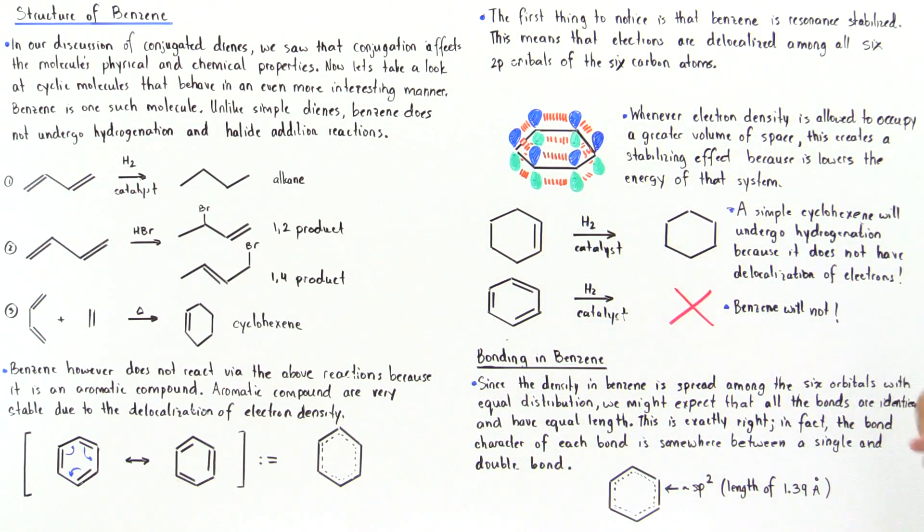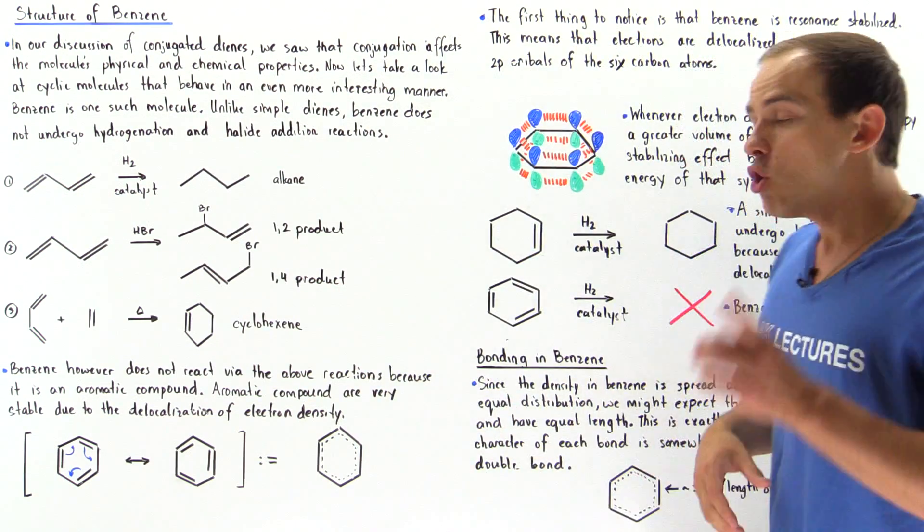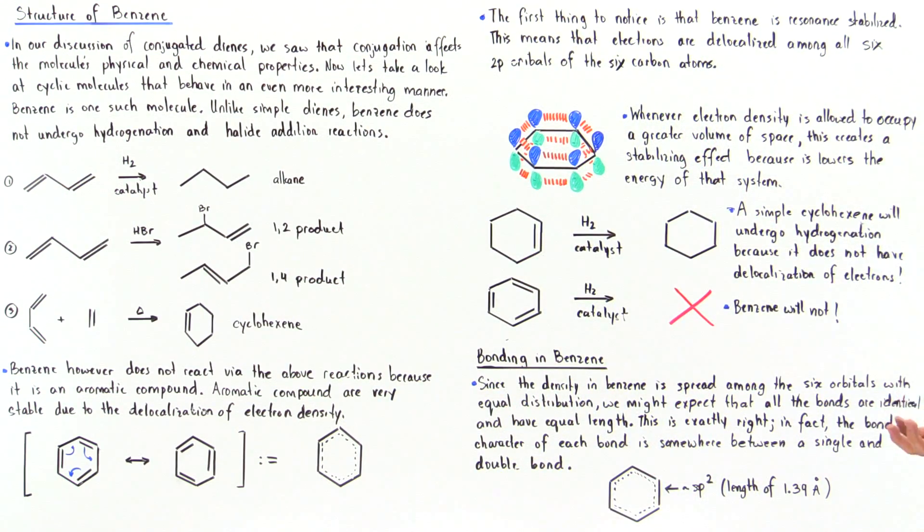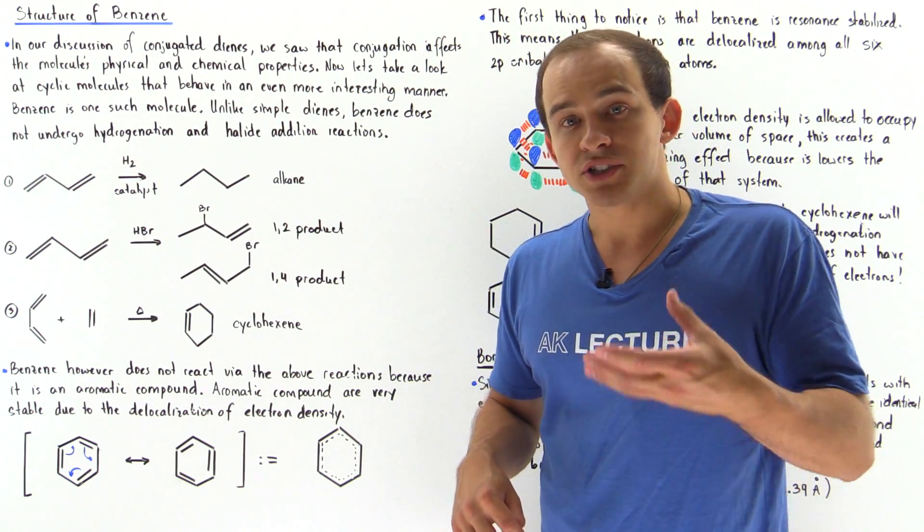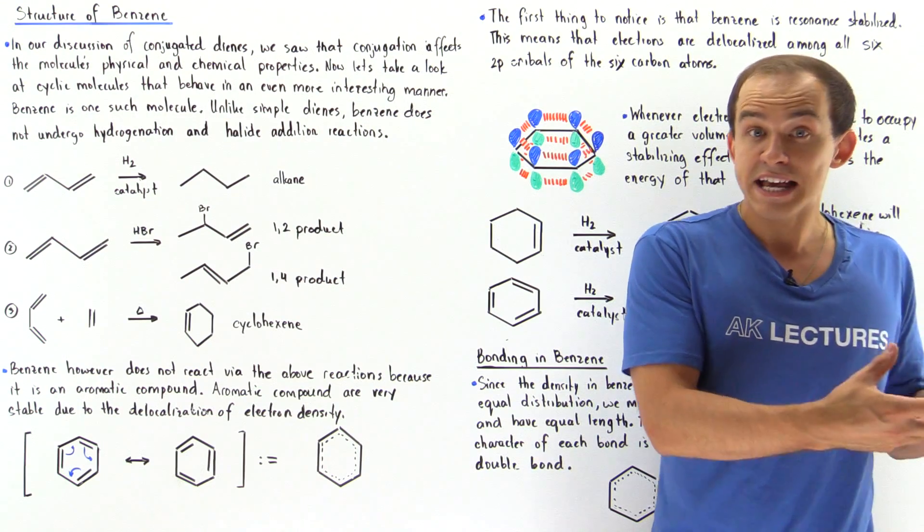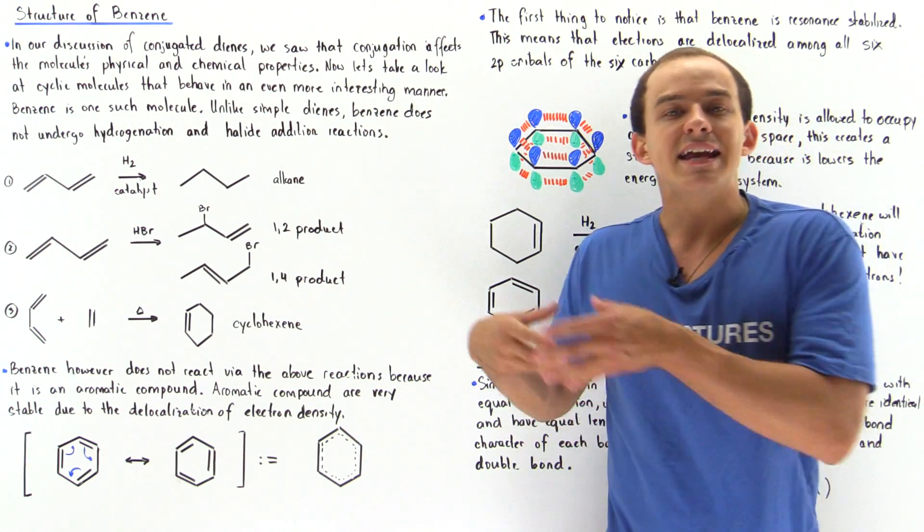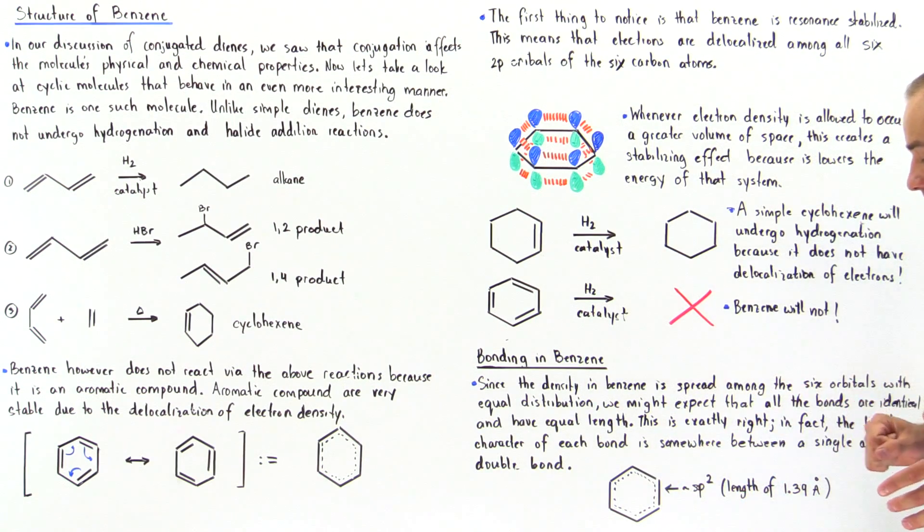Now, since the electron density in benzene is spread out among all these six carbons, all these six orbitals with an equal distribution, we might expect that all the bonds in benzene are identical. And that's exactly right. The bond characteristic in benzene is somewhere between a single bond sp3 hybridized and a double bond sp2 hybridized. So inside of benzene, we basically have approximately sp2 hybridization.